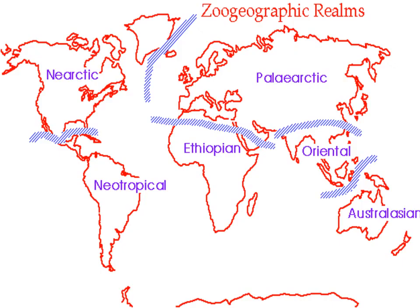This is the map showing the distribution of all these six realms. On the extreme left there is Nearctic, consisting of Greenland, Canada, USA, and Mexico. On the extreme left towards the downside is the Neotropical region, consisting of North America. On the extreme right we have on the top the Palearctic region, below it the Ethiopian region, then the Oriental realm, and finally the Australian realm.